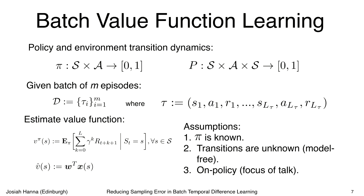We assume we know the policy we want to evaluate, meaning we can evaluate the probability of any action in any state. We assume transition probabilities are unknown — this is the model-free setting. We're in the on-policy setting, where the data was generated by the policy we want to evaluate. Our paper also considers the more general off-policy case where data could be generated from any policy.